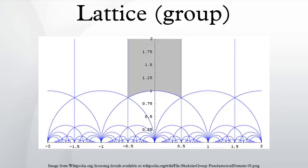Lattices in two dimensions — detailed discussion: there are five 2D lattice types as given by the crystallographic restriction theorem. The wallpaper group of the lattice is given in IUC notation, orbifold notation, and Coxeter notation, along with a wallpaper diagram showing the symmetry domains. Note that a pattern with this lattice of translational symmetry cannot have more, but may have less symmetry than the lattice itself.